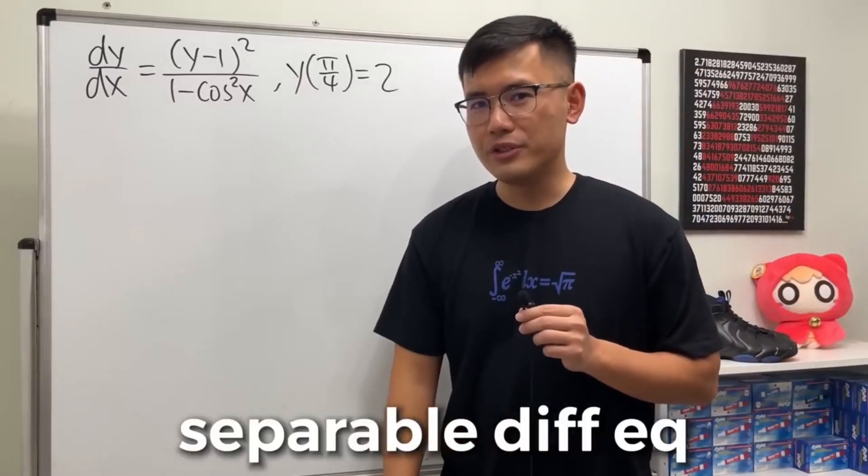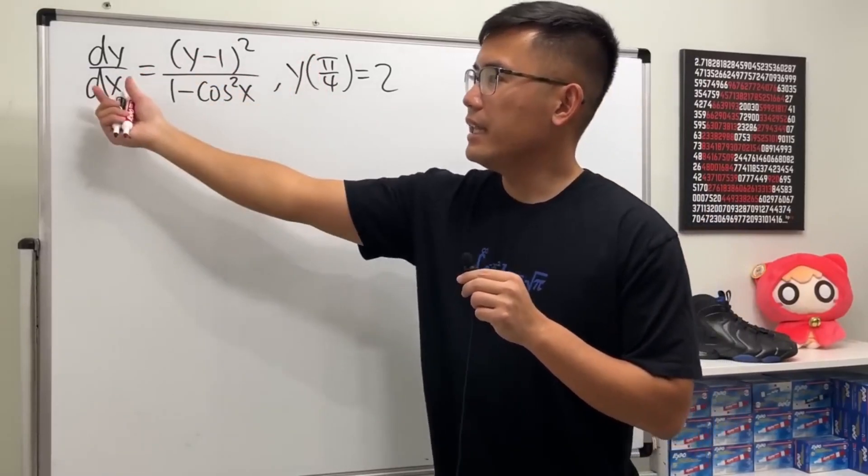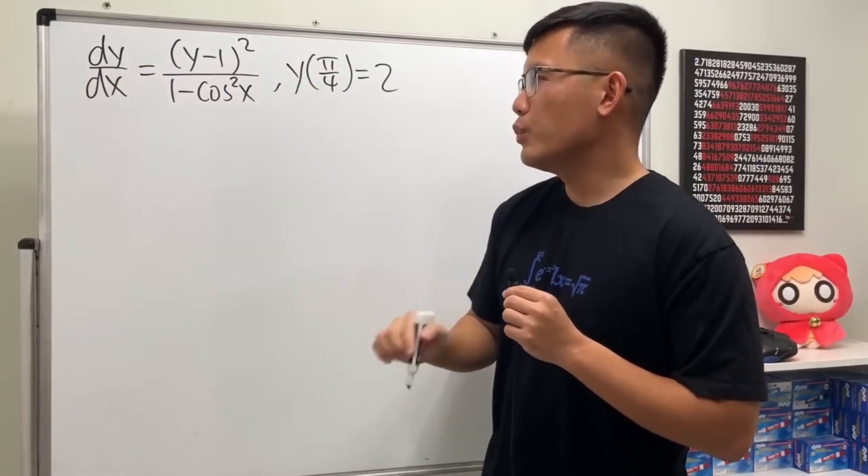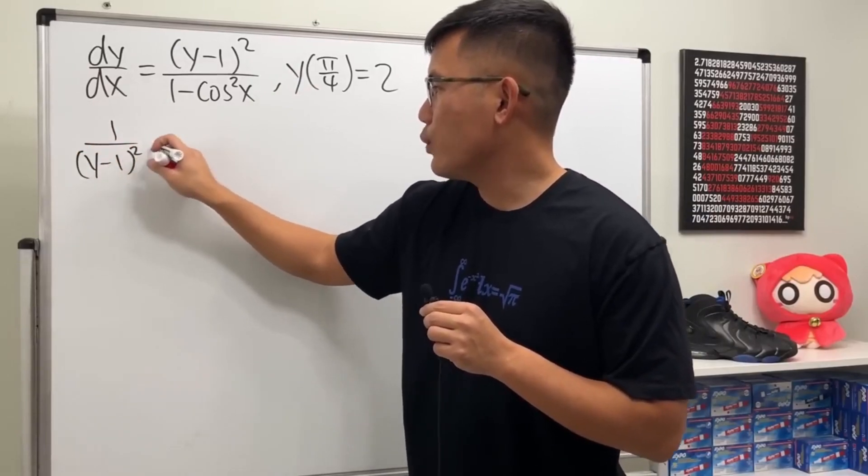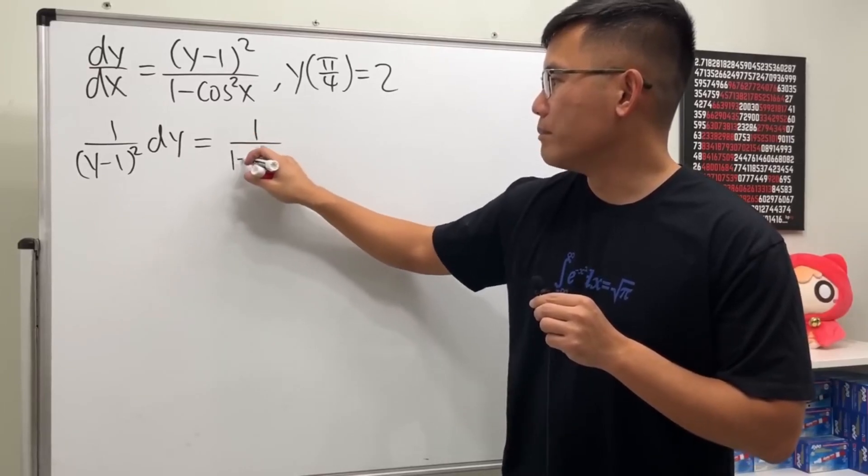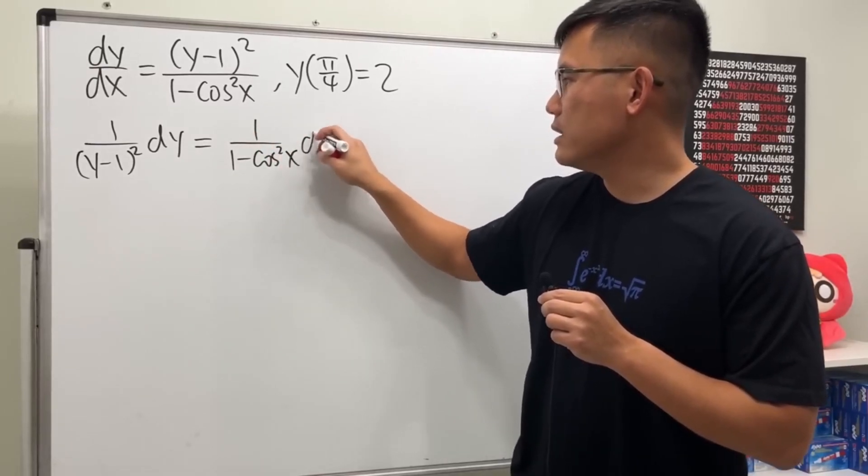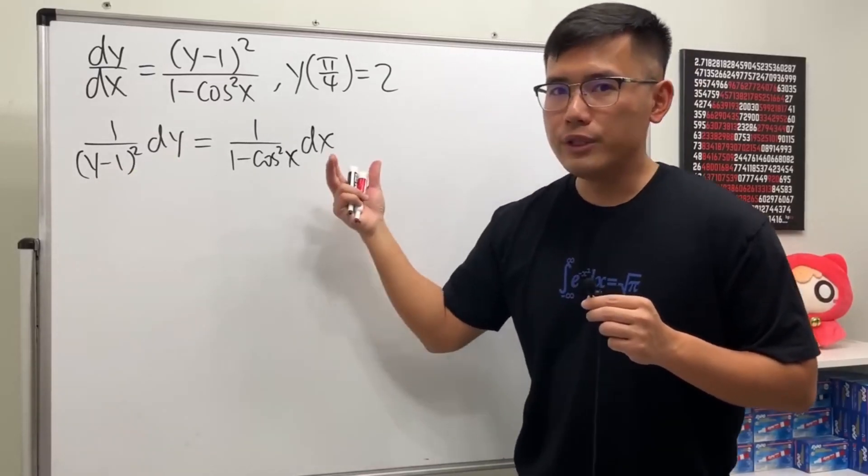For the first one, we have a separable differential equation because we can put the (y-1)² to the other side and multiply dx to here. So we get 1/(y-1)² in the y world, and this equals 1/(1-cos²x) in the x world. As we can see, we have all the y's on one side and all the x's on one side.